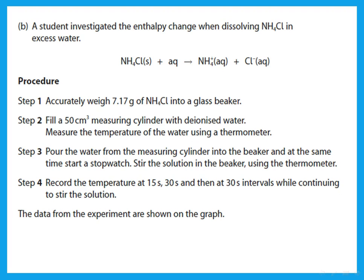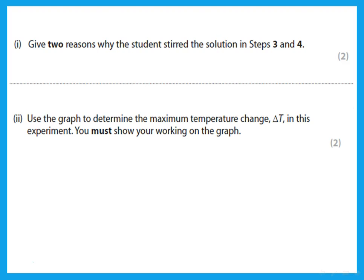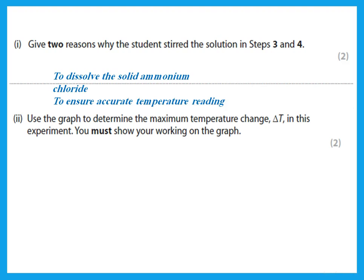A student investigated the enthalpy change when dissolving ammonium chloride in excess water. The procedure: weigh 7.17 g of ammonium chloride into a glass beaker, fill a 50 cm³ measuring cylinder with water, measure the temperature of the water, pour the water into the beaker, start a stopwatch, stir the solution using the thermometer, and record the temperature at certain intervals. The student stirred the solution to dissolve the solid ammonium chloride and to ensure an accurate temperature reading by distributing heat evenly through the solution.